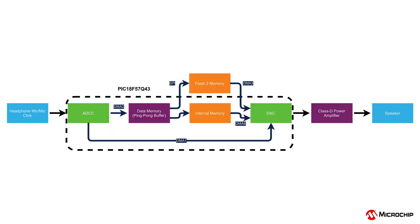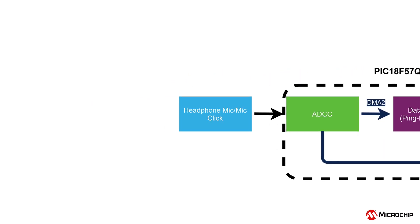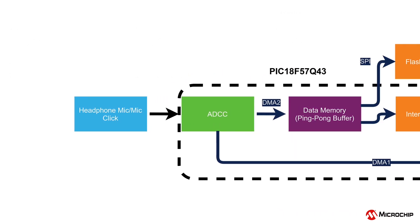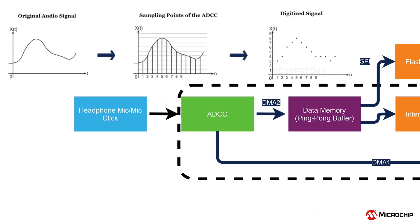Once recording is started, either a headphone microphone or the MicClick signal is sent to the analog-to-digital converter with computation, or ADCC. A 12-bit ADCC samples the audio signal at 10 kHz to produce digitized values that can be read by our microcontroller to transfer the data to memory.